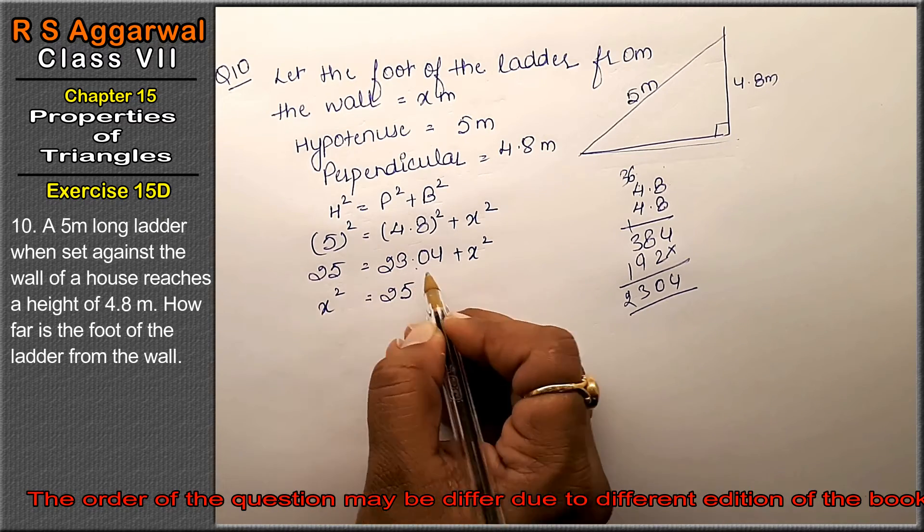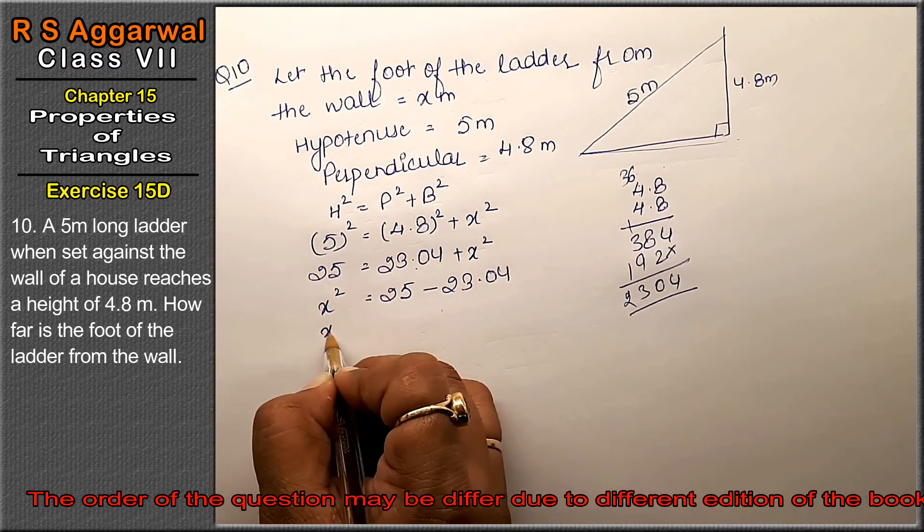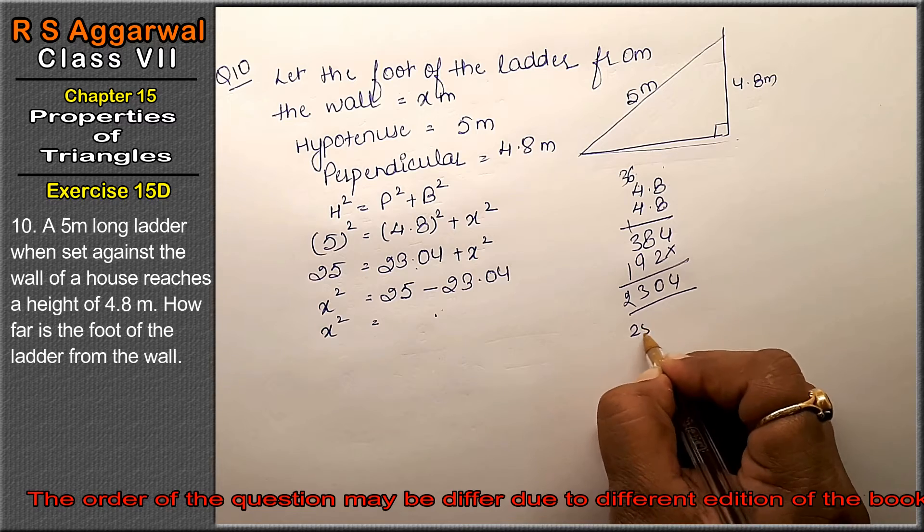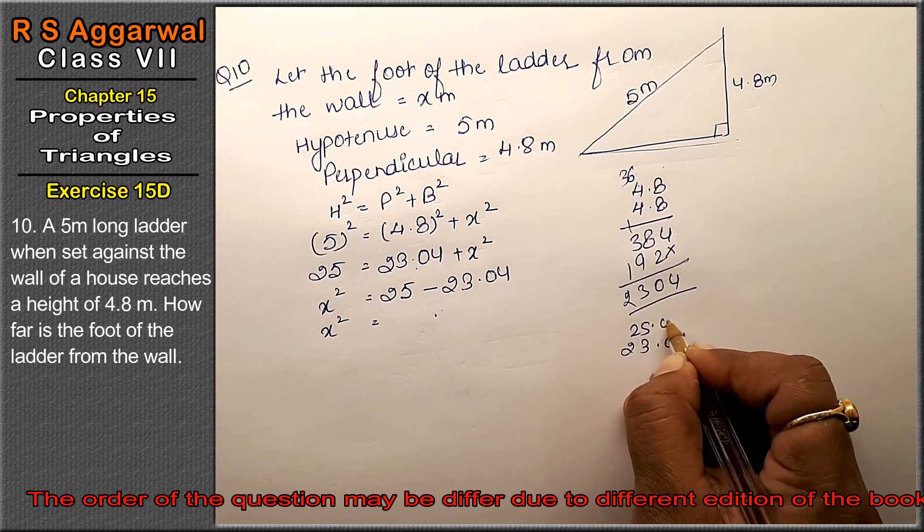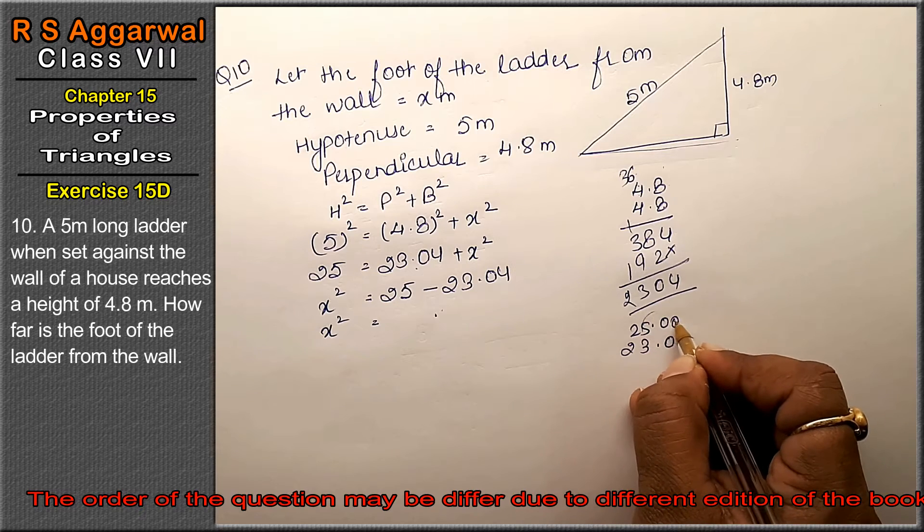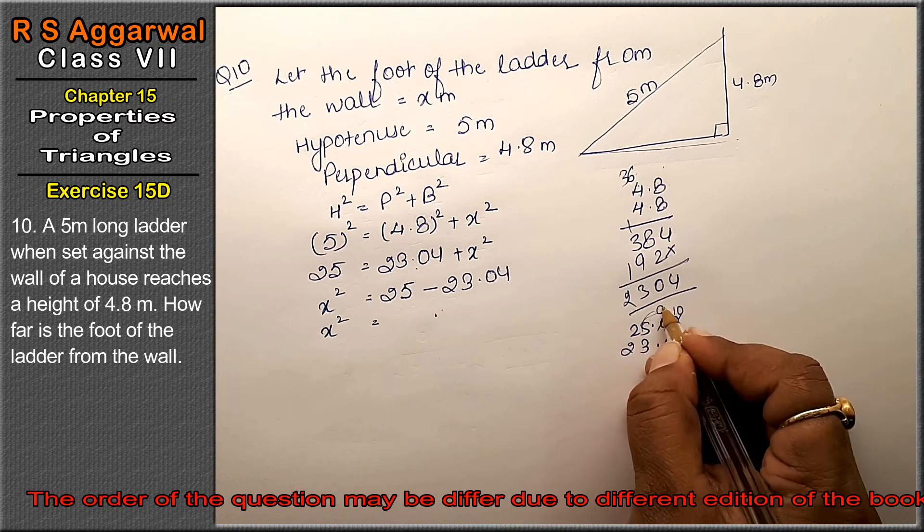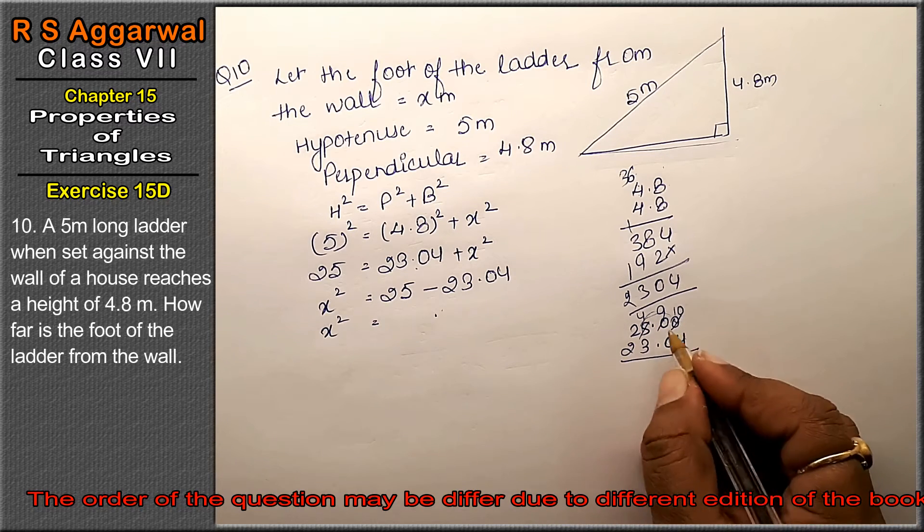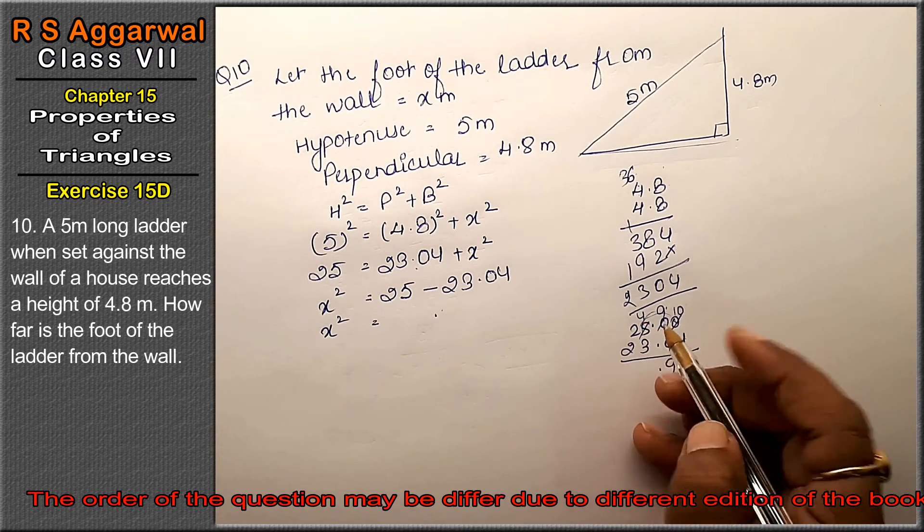So 23.04 plus x squared. X squared value is how much? 25 minus 23.04. From 10 to 4 is 6, from 9 to 0 is 9, from 4 to 3 is 1. So 1.96.